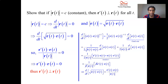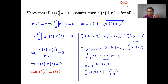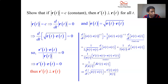All right, great — we're going to use this later, so keep it in mind. A constant value of the magnitude leads to the position function being orthogonal to the velocity function.